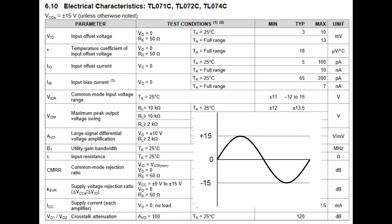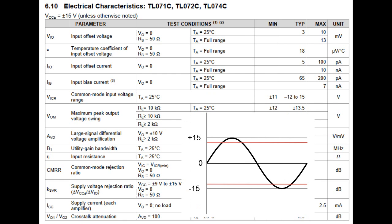The typical output swing is negative and positive 13.5 volts, for a total range of 27 volts. This means we're missing 3 volts in total: 1.5 volts at the top and 1.5 volts at the bottom.